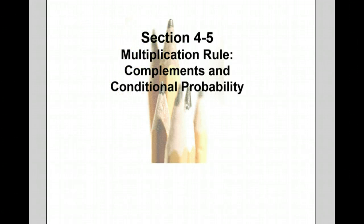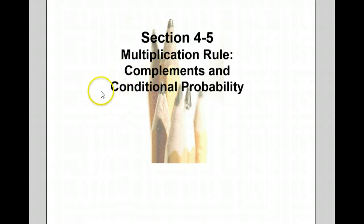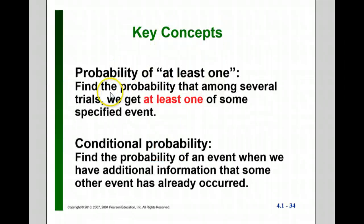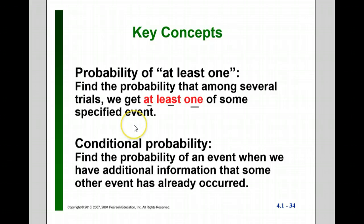Alright folks, this is your 4.5 notes. 4.5 goes a little bit deeper with the multiplication rule, complements, and conditional probability. One of the big things we're going to do in here is what we call 'at least one' probabilities — find the probability of at least one outcome or at least one success out of multiple trials. And then conditional probabilities: find the probability of something that happens given this other thing happened. We saw a preview of that last time when we had to make the adjustment for dependent events.